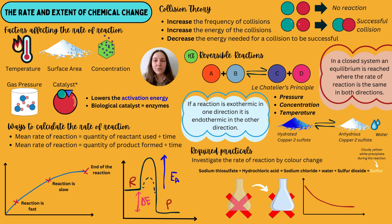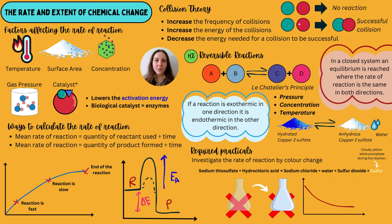The required practical is to investigate the rate of reactions by colour change — the disappearing cross experiment. You react sodium thiosulfate with hydrochloric acid, which forms sulfur gas — particularly hazardous, so this is done in a fume cupboard or well-ventilated space. A yellowy, creamy-white precipitate of sulfur forms in the solution. You place a conical flask with the mixed solution over a piece of paper with a cross on it, and eventually you can no longer see the cross through the flask as the precipitate forms. Products also include sulfur dioxide, sodium chloride, and water.